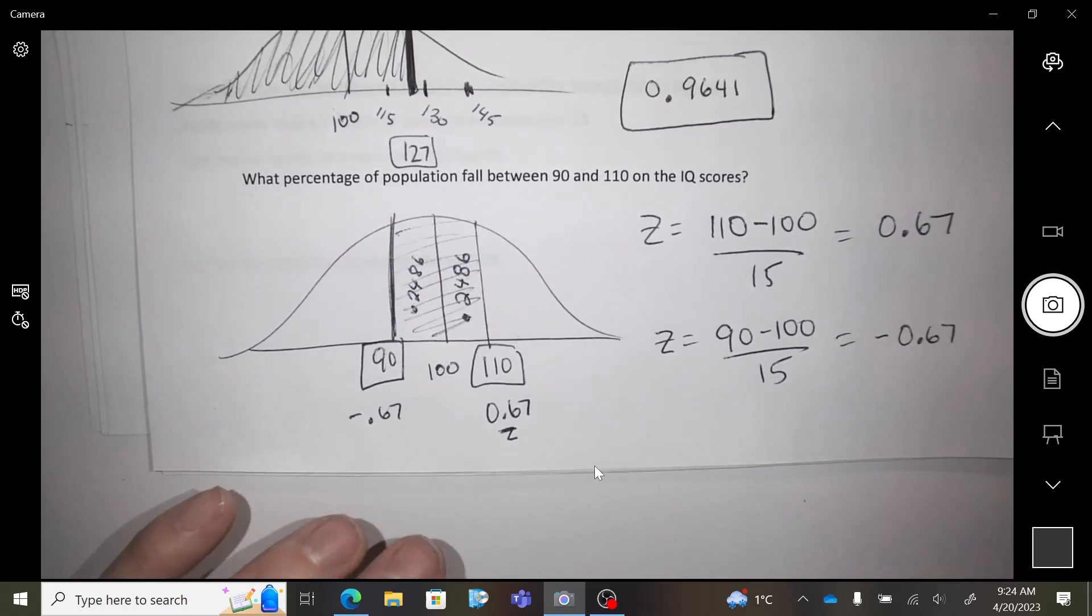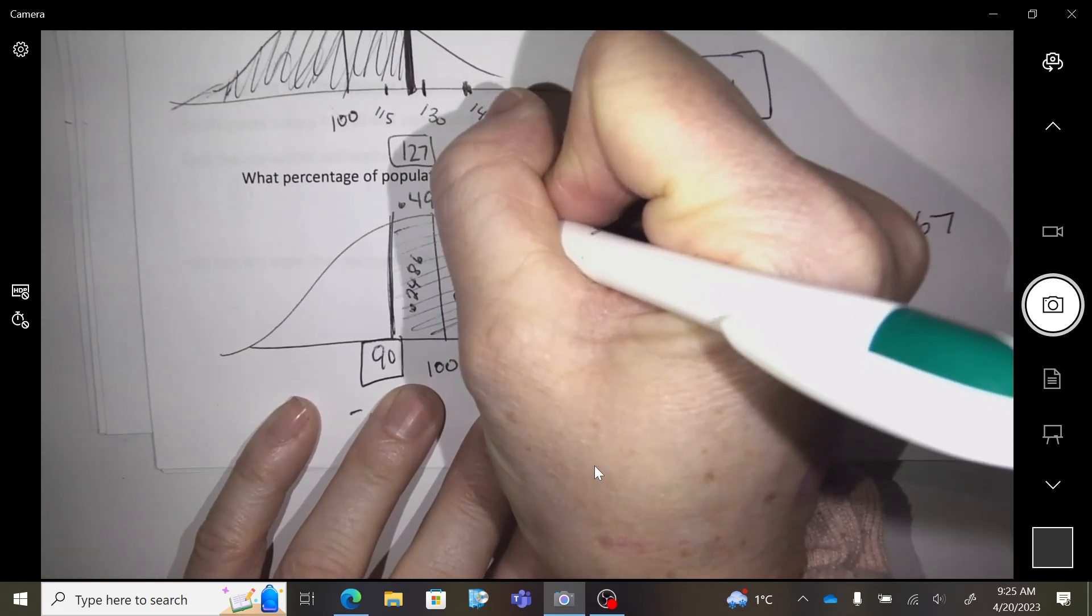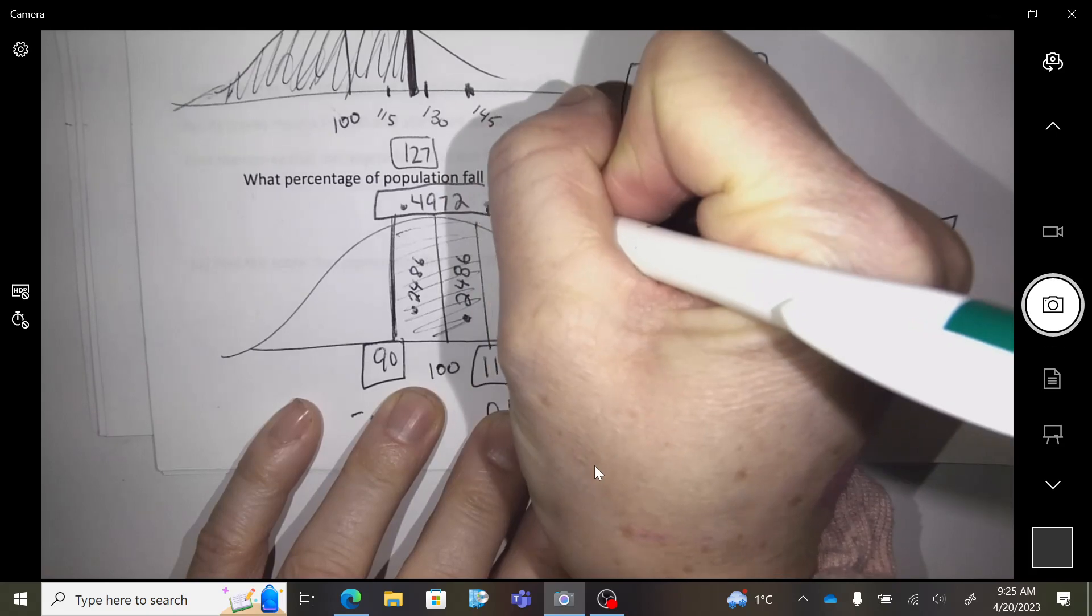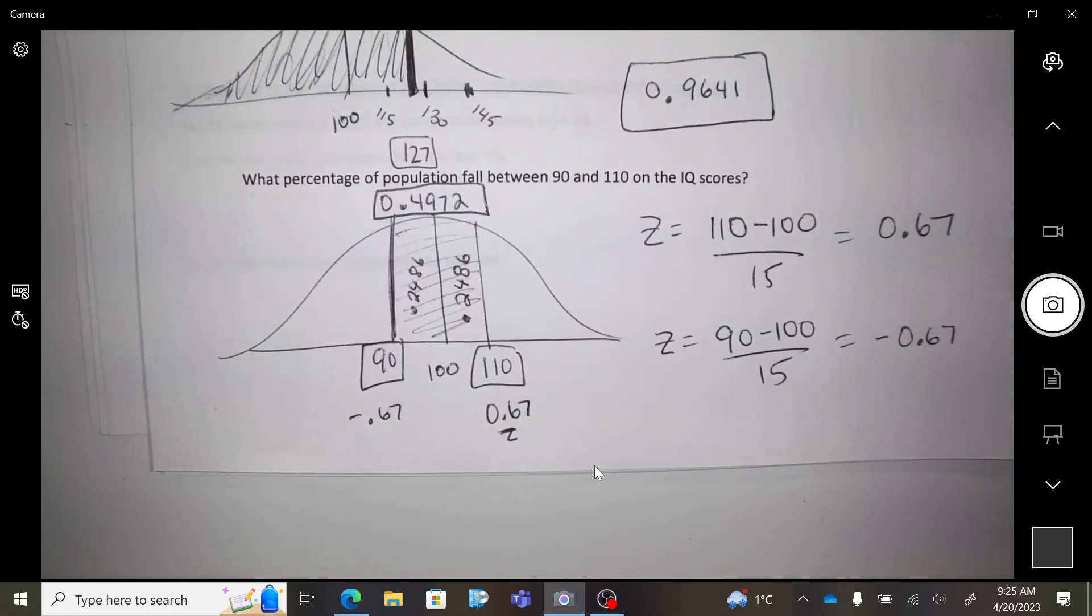Do you understand that that would be the same on the negative side? So what is your final answer? How much percent of the data is in that zone? So now you have to double that. So 49.72% of the data falls in between.